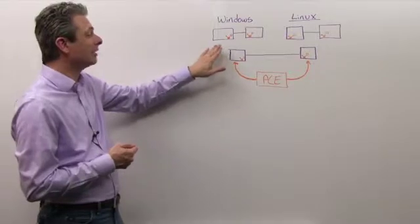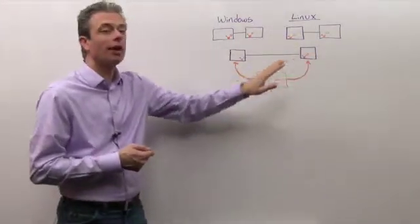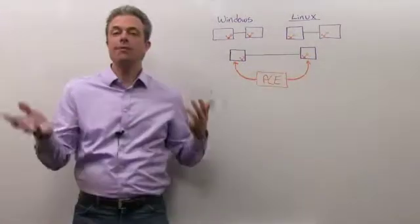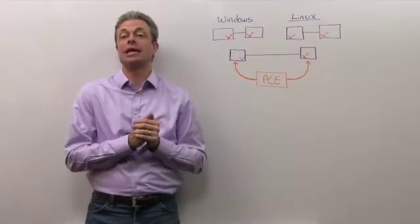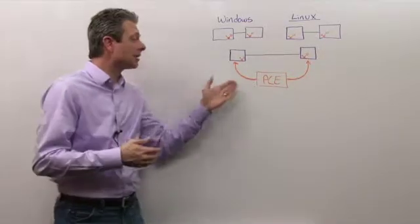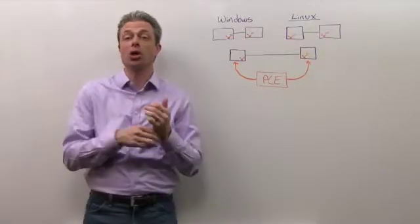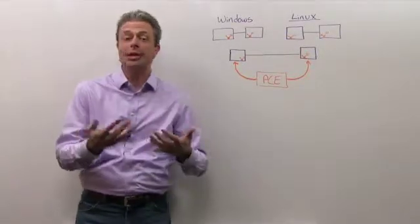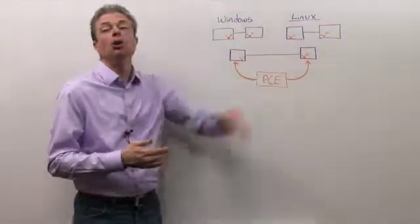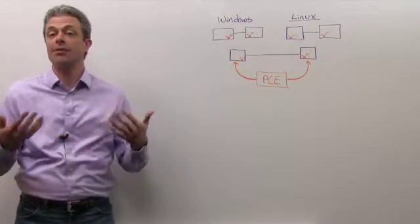Instead of somebody saying I need to literally encrypt traffic from here to there, we can simply say all of the traffic between my web servers and databases is encrypted. And then the policy compute engine can actually do the work of understanding what that means and go ahead and program all of the relevant things in the environment for that to happen.